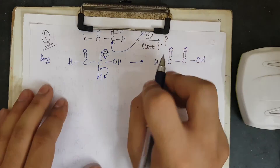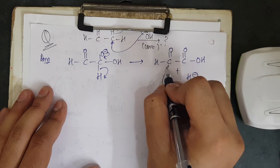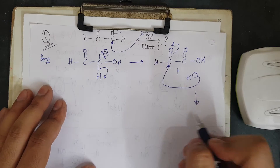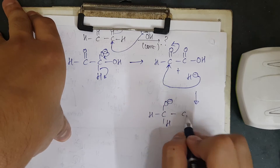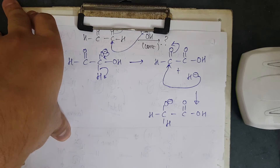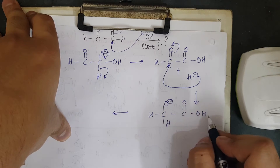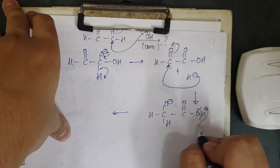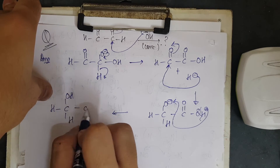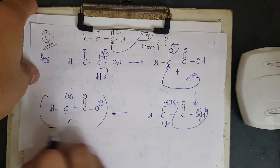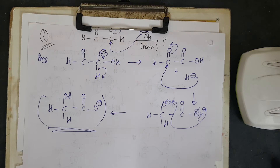The H⁻ generated attacks the other carbonyl in the same molecule. This gives HCOO⁻ and HCH₂OH intermediate. As discussed, the minus charge is more stable on the carboxylate side rather than the alkoxide, so H⁺ transfers intramolecularly: the final product is HCOOH and HCOO⁻ — actually HCOOH and CH₂OH with rearrangement giving HCOO⁻ and CH₂OH. You can see how simple the Cannizzaro reaction is.